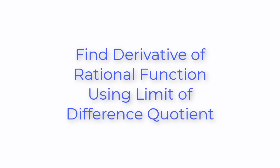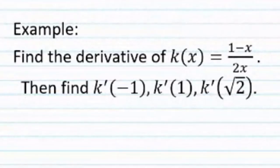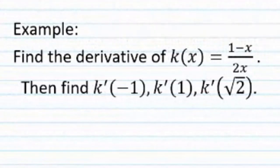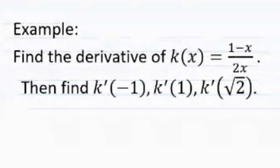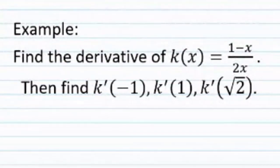I'm Miss Hearn. Let's get started. It says find the derivative of k of x, which is equal to 1 minus x over 2x, and then find k prime at negative 1, k prime at 1, and k prime at the square root of 2.